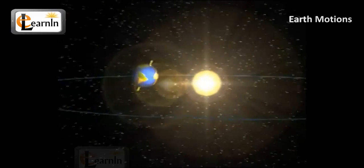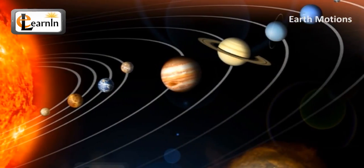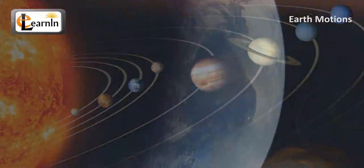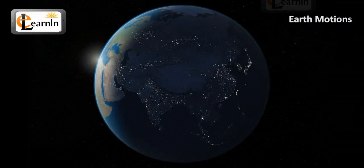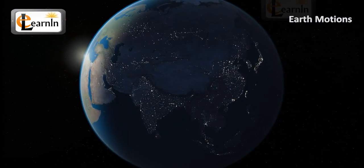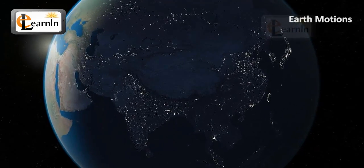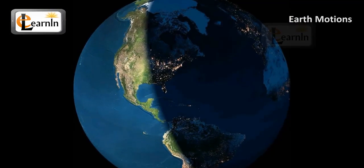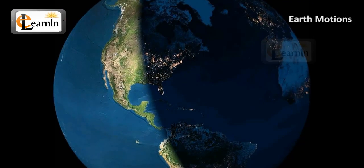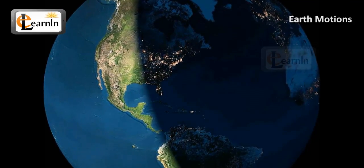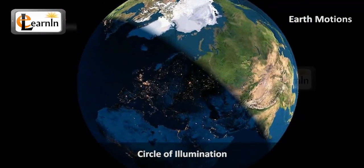Its rotation is what causes day and night. Earth makes one full rotation every 24 hours. Different sides of the earth are exposed to the sun — the one that faces the sun becomes the day, and the one faced away from the sun has night. A line that bisects areas on the earth receiving sunlight and those areas in darkness cuts the earth into lighted and dark halves, which is the circle of illumination.